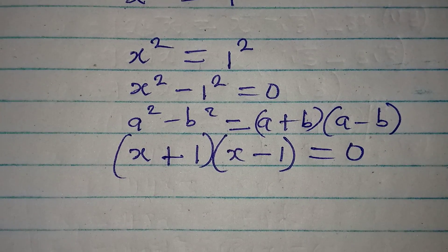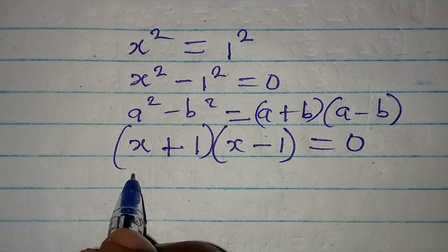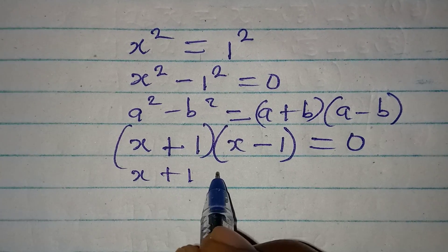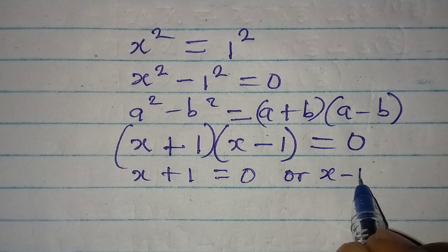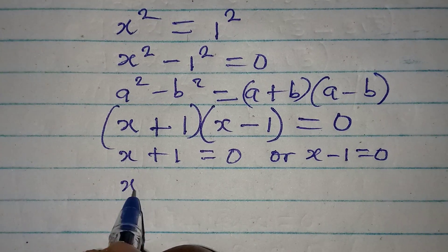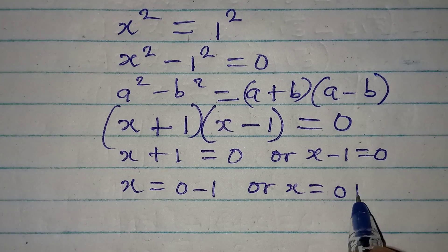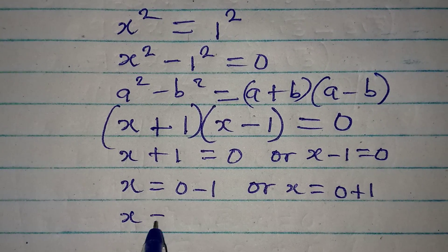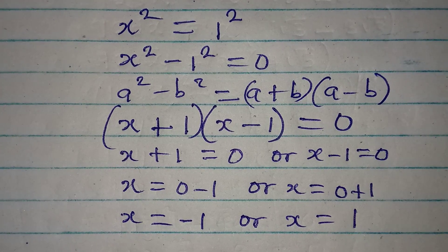Now we can apply zero product property because we have two factors already. So x + 1 = 0 or x - 1 = 0. From here x is equal to 0 - 1 or x is equal to 0 + 1. x is equal to -1 or x is equal to 1.